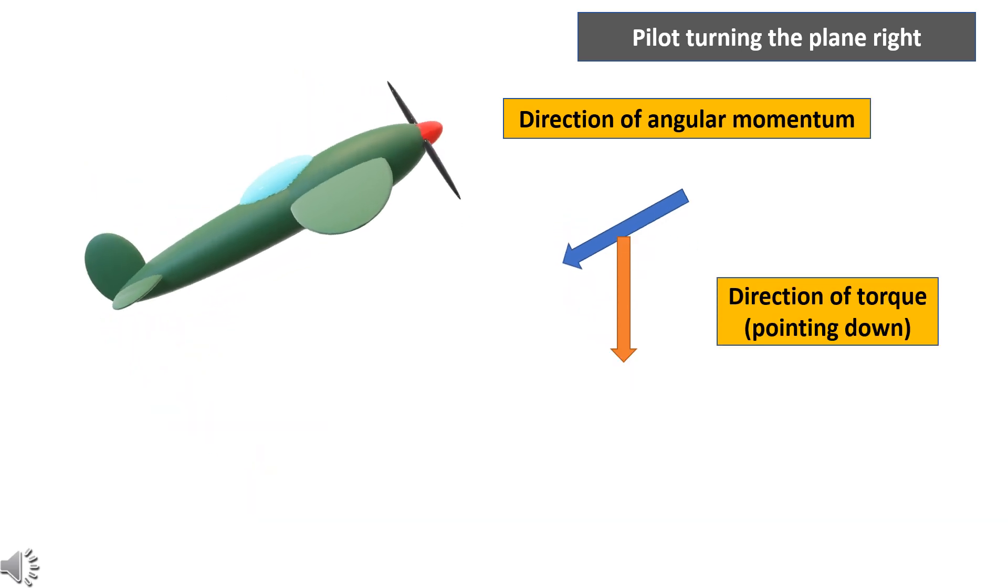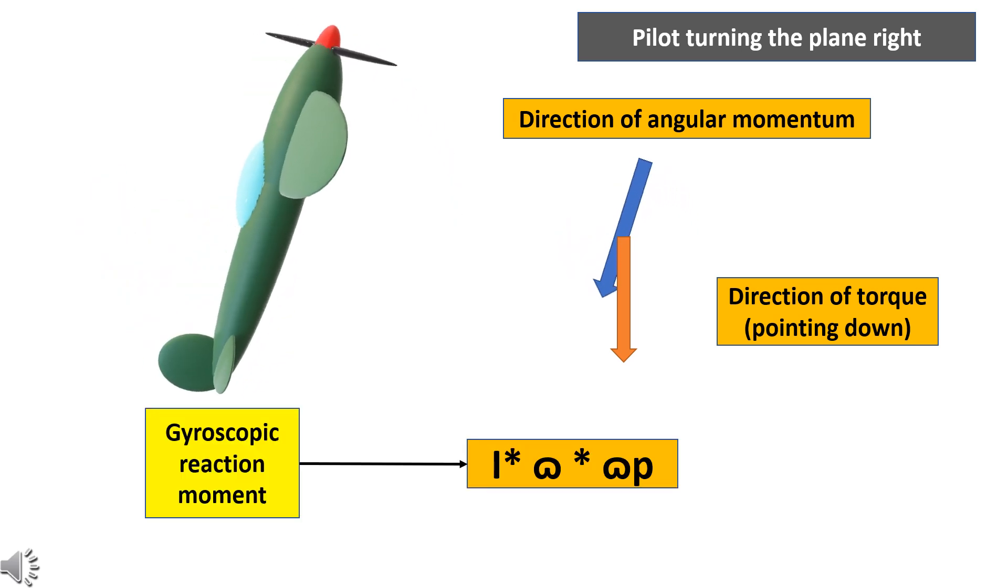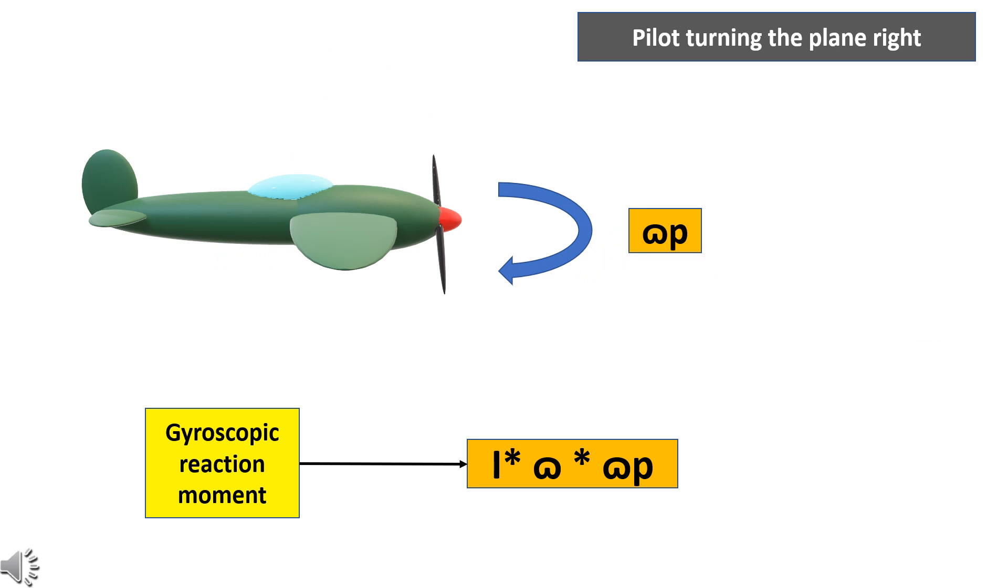The magnitude or values of this gyroscopic moment can be calculated using a simple expression. The gyroscopic moment is the product of moment of inertia of the propeller, angular velocity of the propeller, and the precession angular velocity. The precession angular velocity is nothing but the angular velocity with which the pilot was trying to turn the aircraft.